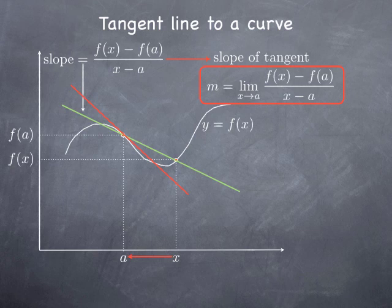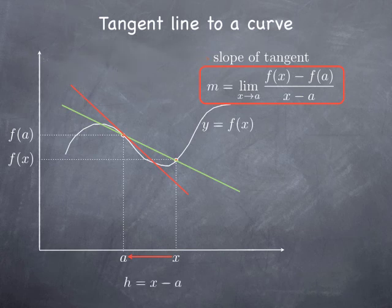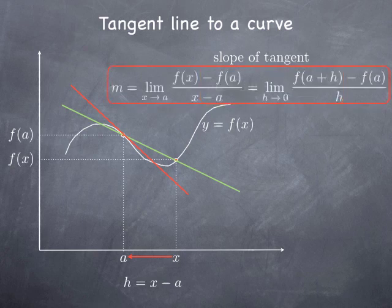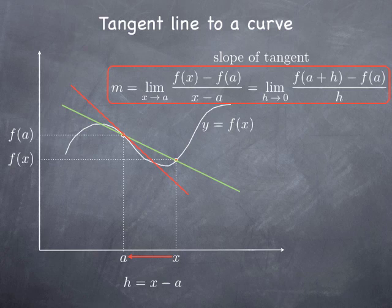Note that if we let h equal x minus a, so as x approaches a, h approaches 0, we can rephrase the same limit as the limit as h is approaching 0 of f(a plus h) minus f(a) over h. So this is how we get the slope of the tangent line to the graph of a function at a given point.